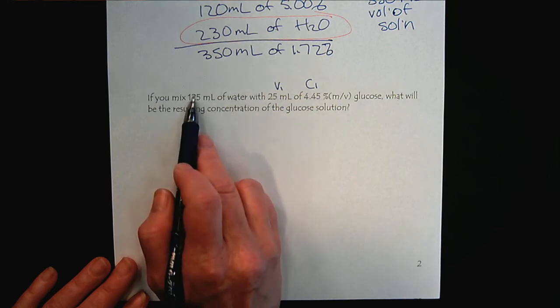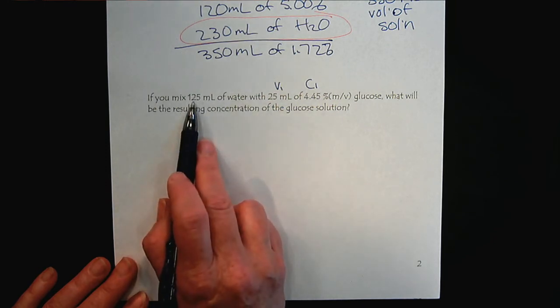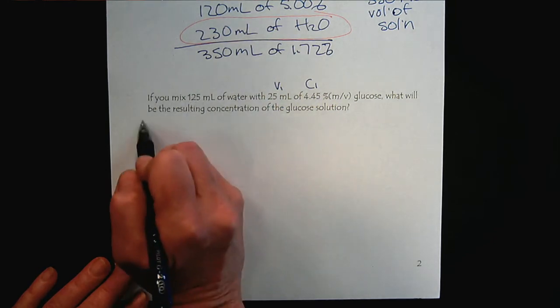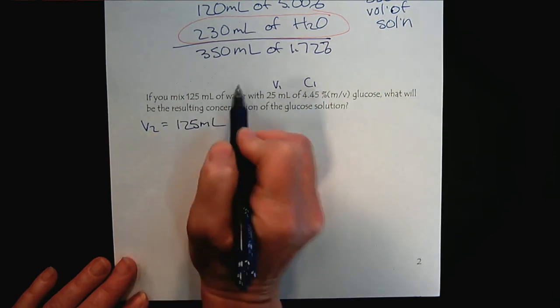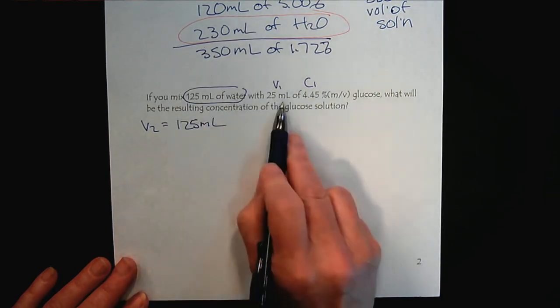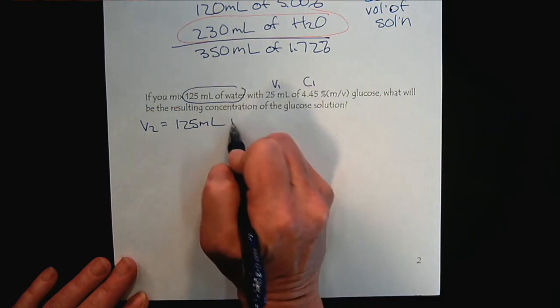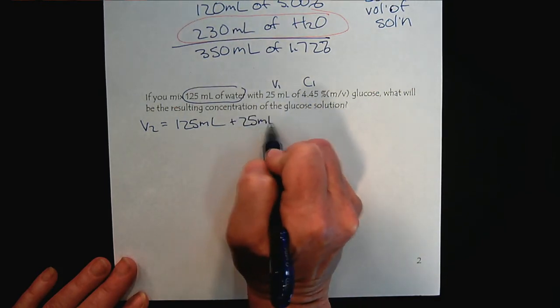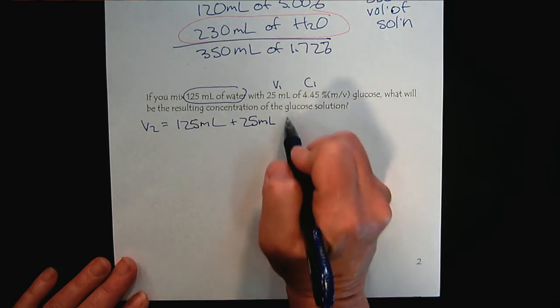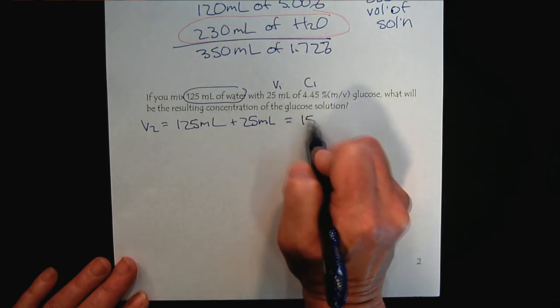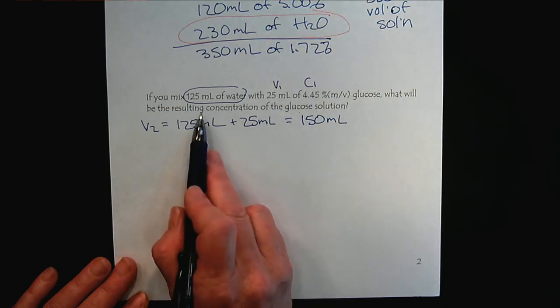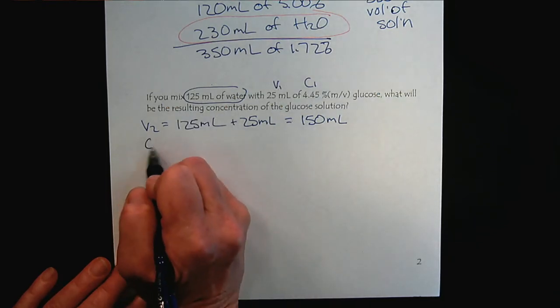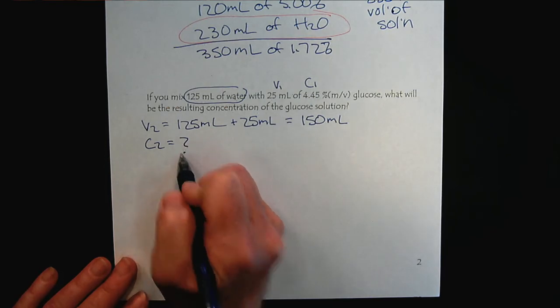Remember, V2 is going to be the 125 mils of water that we add plus the 25 mils of the glucose solution. So, V2 is going to be 150 milliliters. What's the resulting concentration? That's what we're trying to calculate. This one, we'll be solving for C2.